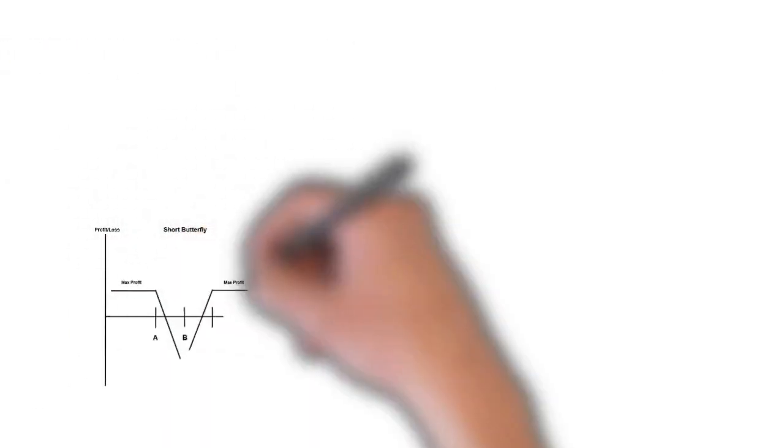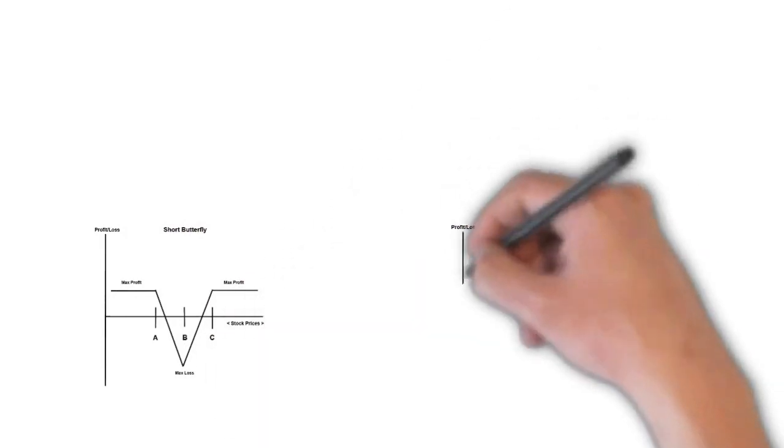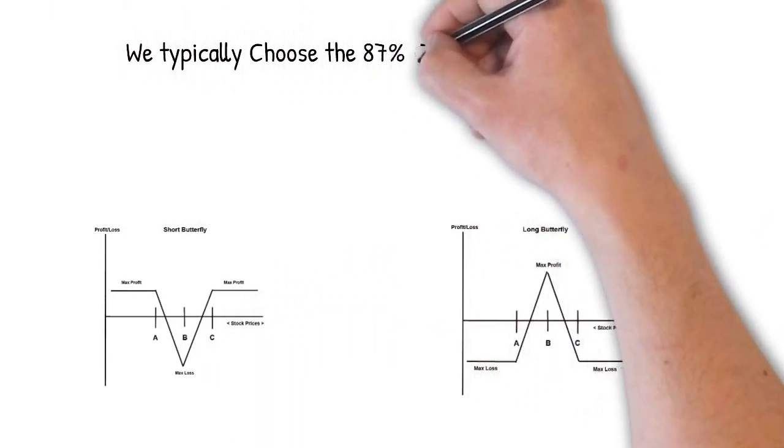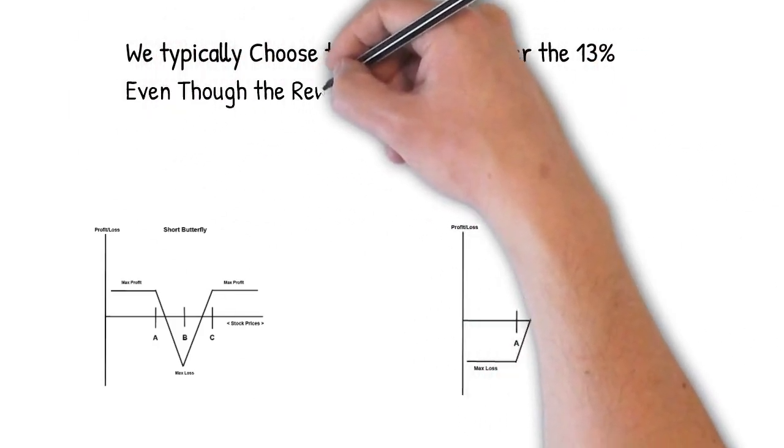We are probability traders. Therefore, we would normally choose the 87% chance of a profitable trade over a 13% chance of a profitable trade.